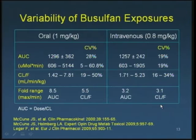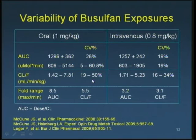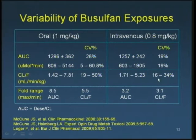The variability of busulfan exposures is quite large. The original oral formulation dosed at 1 mg/kg shows interpatient AUC variability up to 61%, and clearance coefficients of variation up to 50%. More recently, an intravenous formulation was developed by researchers at MD Anderson and University of Houston to overcome these issues. The IV form has slightly lower variability, but it is still variable and considerably more expensive.